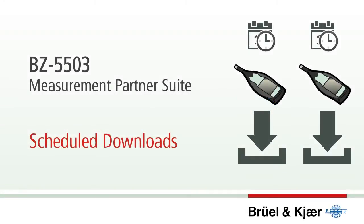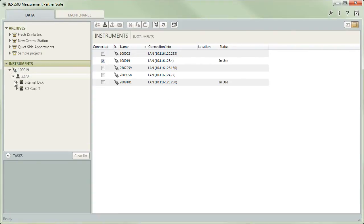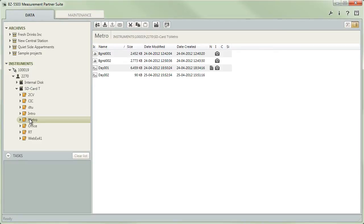You can set up Measurement Partner to automatically connect to your handheld analyzer at regular intervals and pull data from the instrument. You can schedule several tasks for the same or different instruments. To schedule such downloads, connect manually to the instrument, select the user account, disk or folder on the device from where new data should be taken, and click the To Archive button.